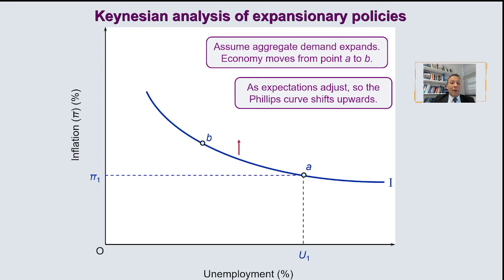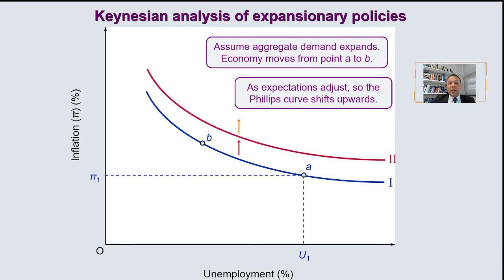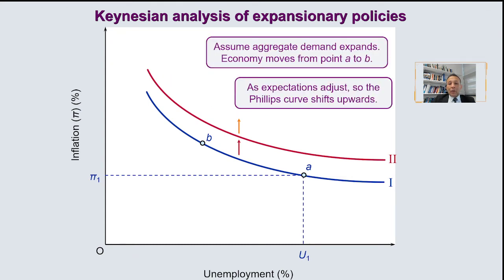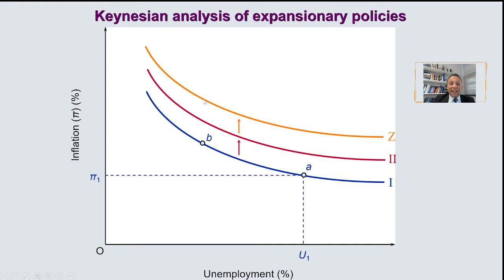Expectations then adjust upward, so the next year expectations are that the Phillips curve as a whole will shift upward — people will expect higher inflation. Remember that the Phillips curve shifts every time expectations increase. As aggregate demand increases, agents in general are going to expect this inflation to come. As a result, we will have permanent increments in inflation as expectations carry on increasing, resulting in higher and higher inflation.